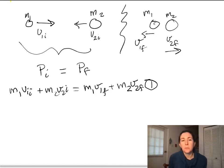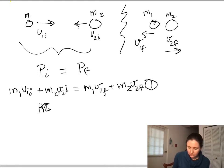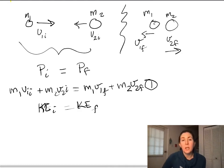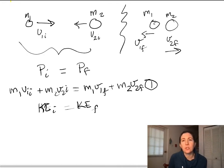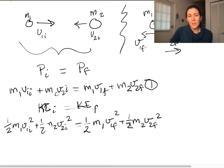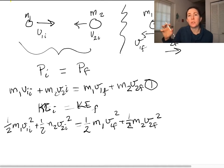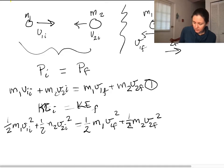We can then create a second equation where the kinetic energy initial is equal to the kinetic energy final. If this is a completely elastic collision, then kinetic energy will be conserved. Remember, in inelastic collisions kinetic energy is not conserved. So we write our conservation of kinetic energy equation: the initial kinetic energy of M1 plus M2 equals the final kinetic energy of M1 plus M2. This is our second equation.